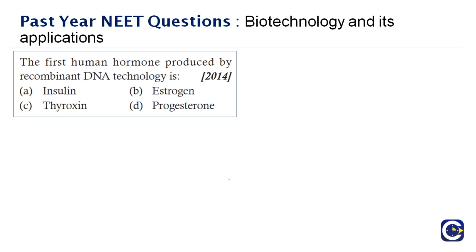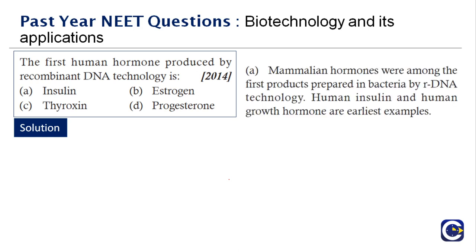Next question, asked in 2014: the first human hormone produced by recombinant DNA technology is — it is insulin. Many people suffer from diabetes and use insulin daily. Insulin is naturally secreted by the body, but can now be produced artificially and injected. Mammalian hormones like human insulin and human growth hormone are produced using recombinant DNA technology.